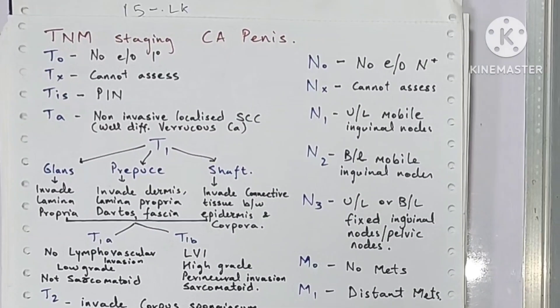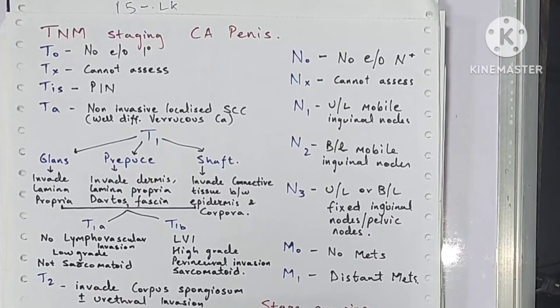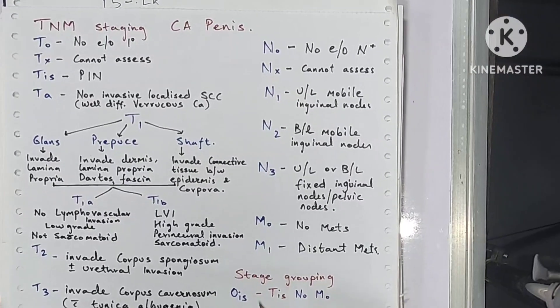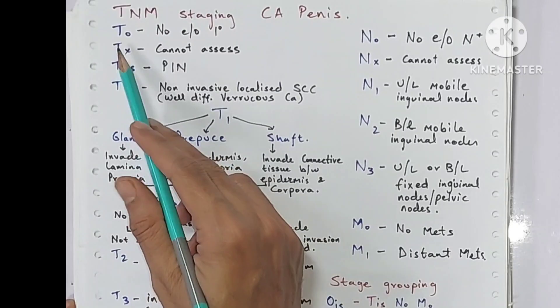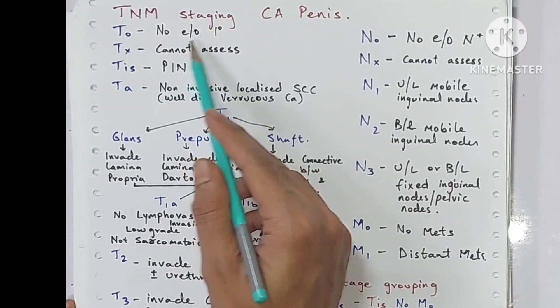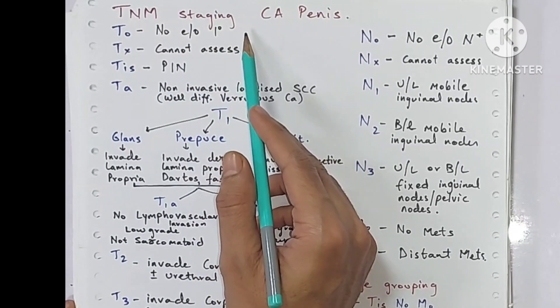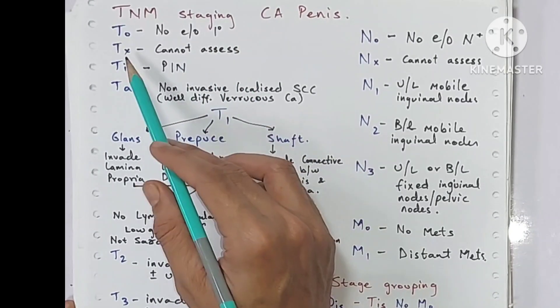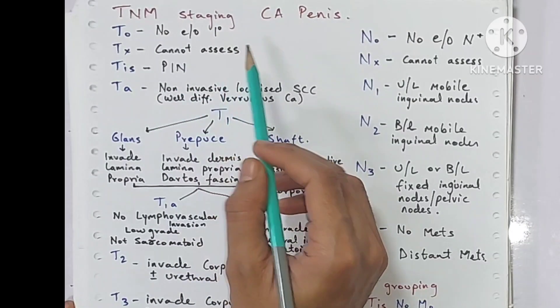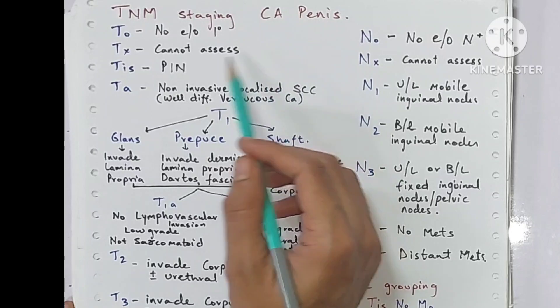Today we will be discussing TNM staging of carcinoma penis. T0 is when there is no evidence of primary tumor. Tx is when the primary tumor cannot be assessed.